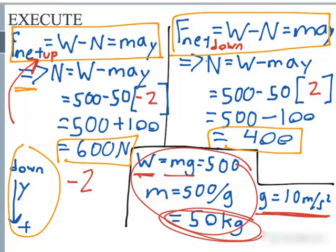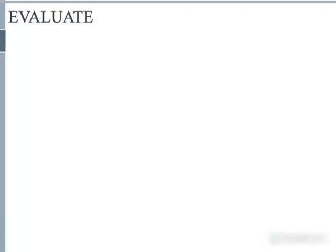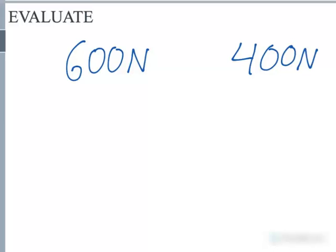So the next step is to evaluate these problems. Now we had 600 newtons and we had 400 newtons, and the man's normal weight was 500 newtons. So if the elevator was moving up, and if the elevator was moving down. Now it seems reasonable.